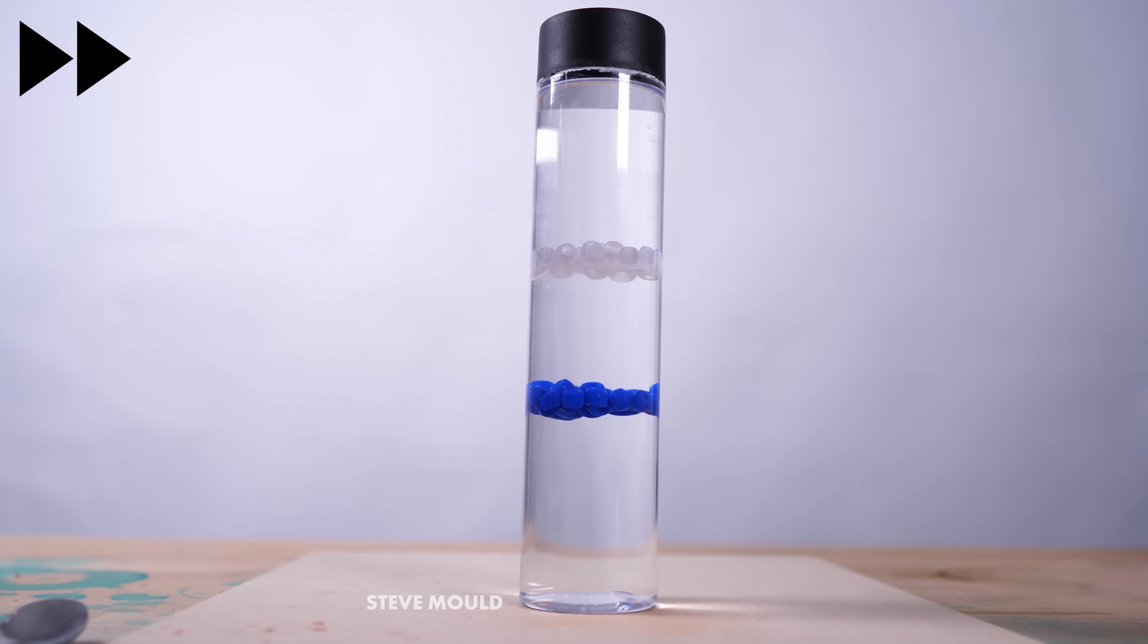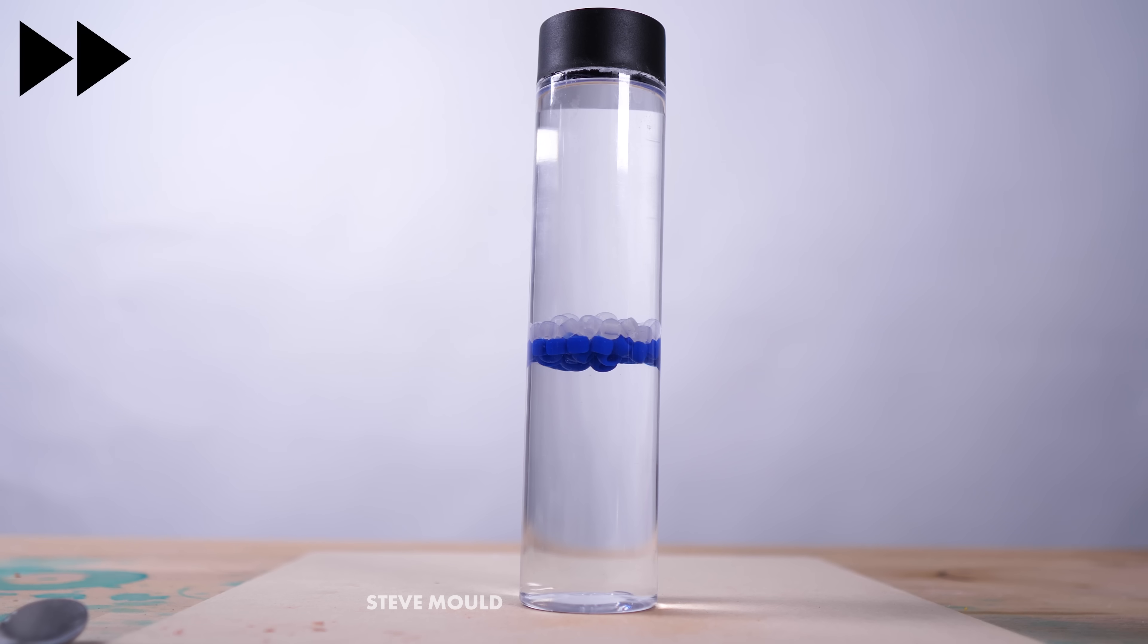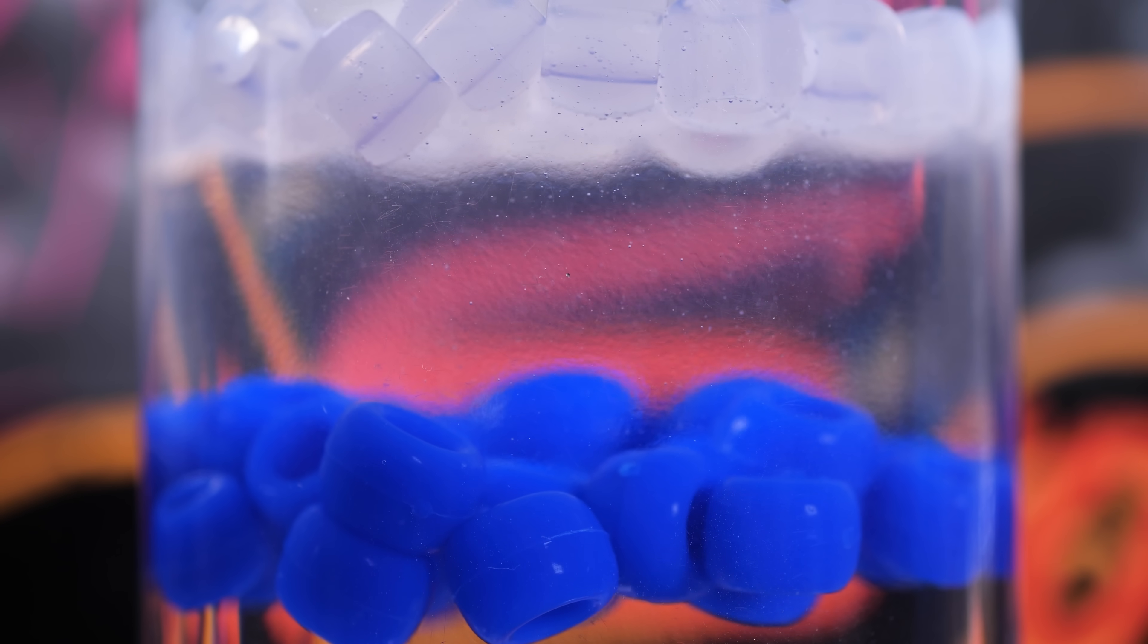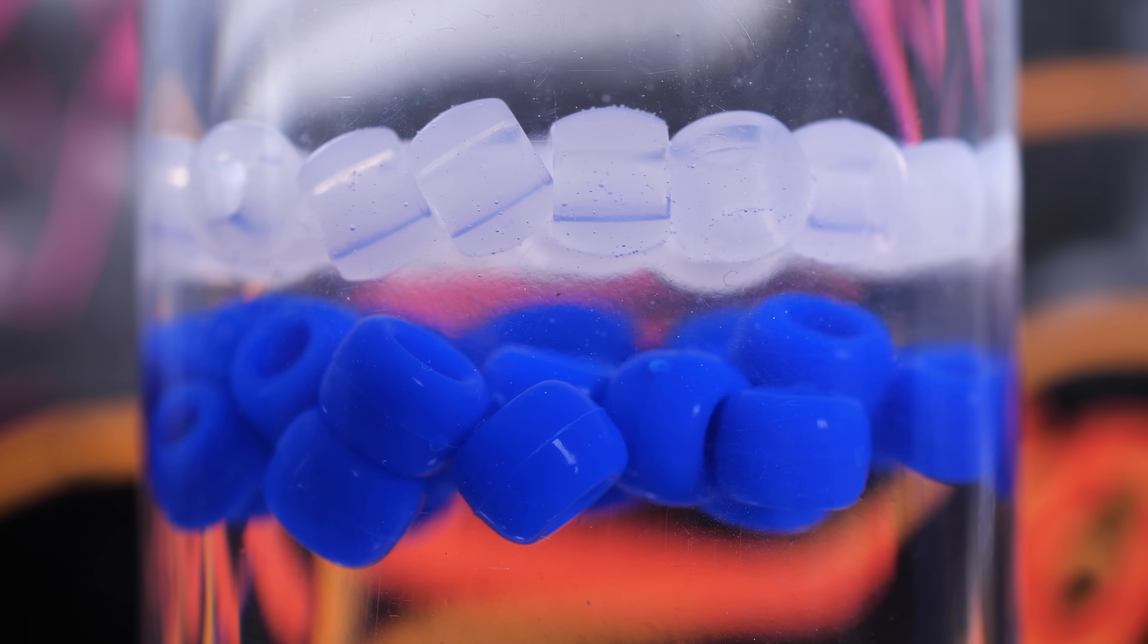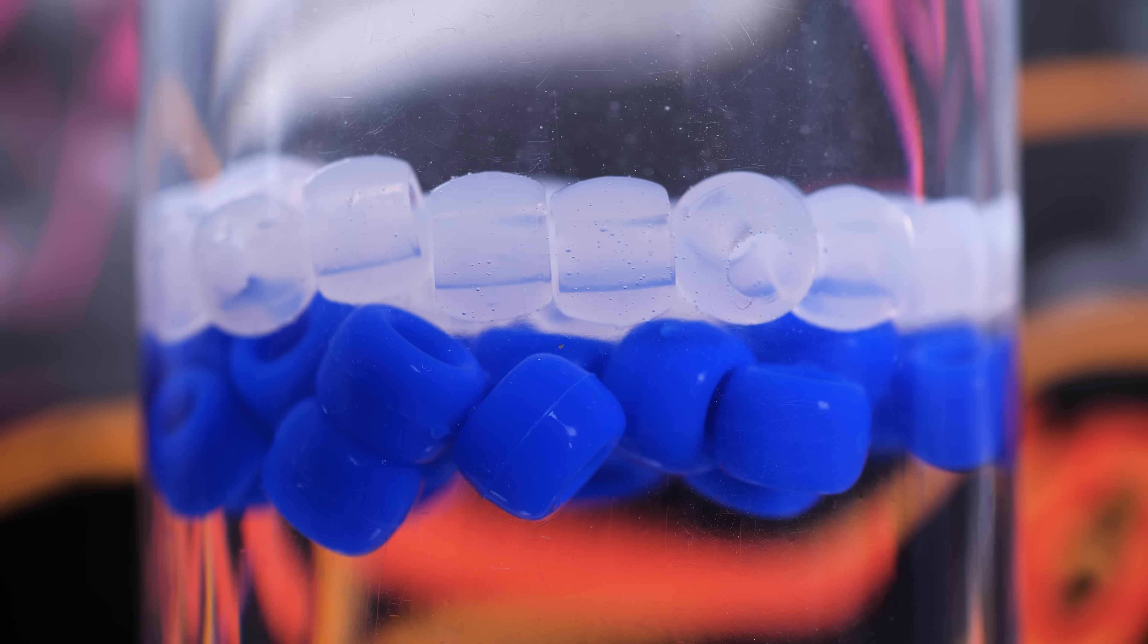The trick is that there are two liquids in the bottle that don't mix. One is not soluble in the other. So when you shake it, it creates an emulsion where droplets of one liquid are floating in the other. The density of the emulsion is halfway between the density of the top liquid and the bottom liquid, and the densities of the beads are chosen so that they sit at the top and bottom of the emulsion. So as the emulsion separates, the beads slowly come together.